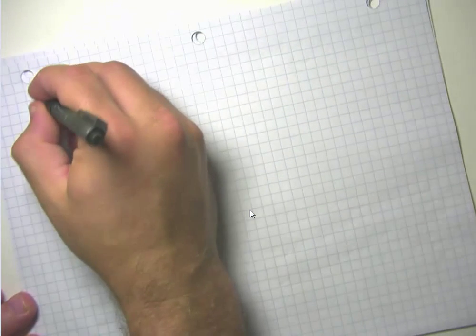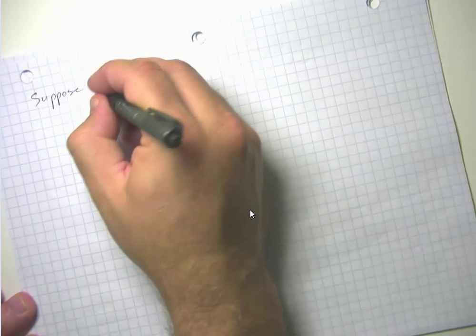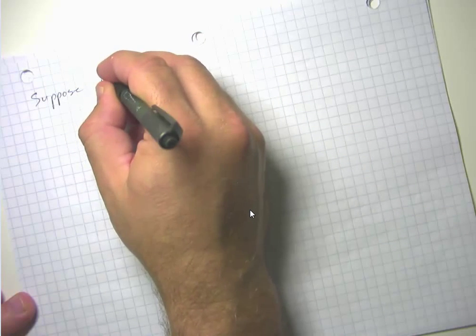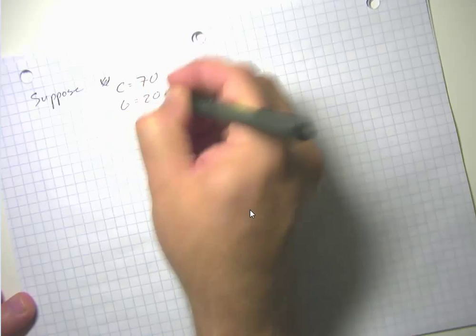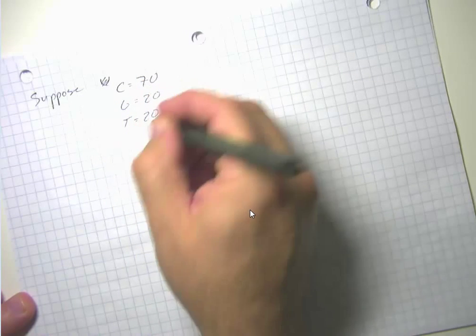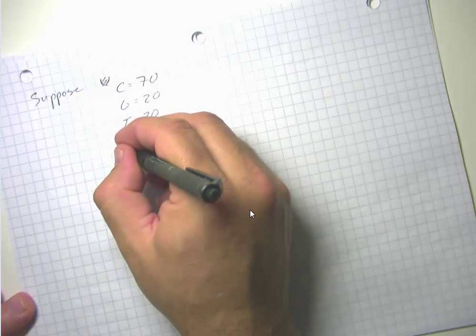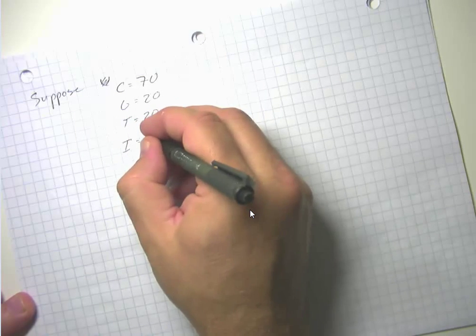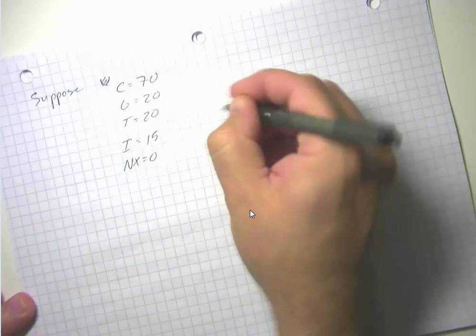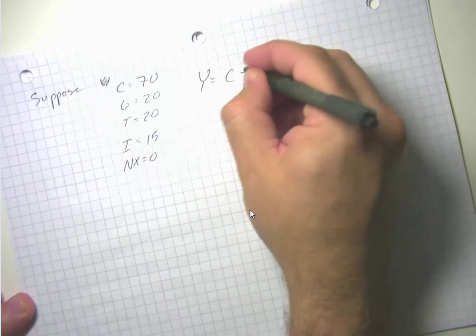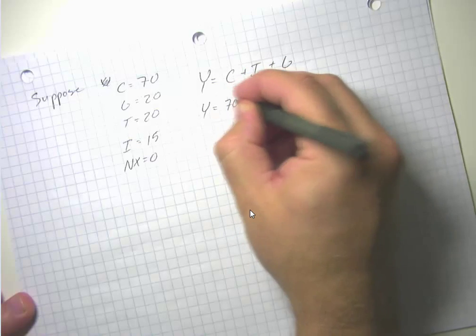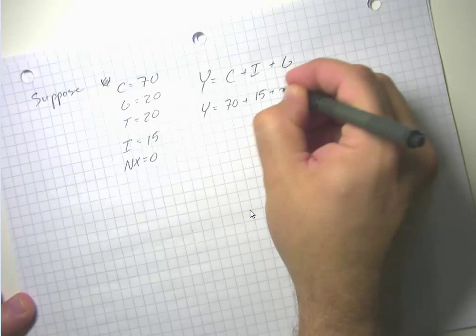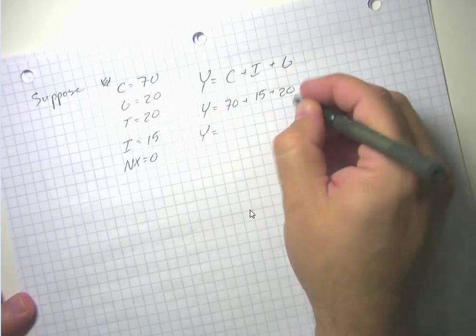Let me go ahead and do a second example with some numbers. Suppose consumption spending equals 70, government spending equals 20, taxes initially equal 20, and investment spending equals 15. That means GDP equals 70 plus 15 plus 20, so GDP equals 105.